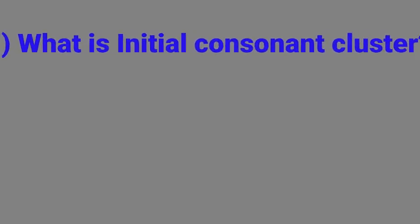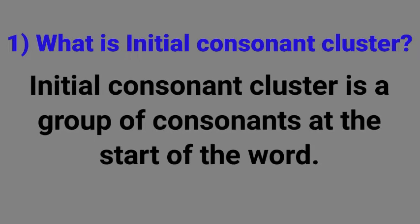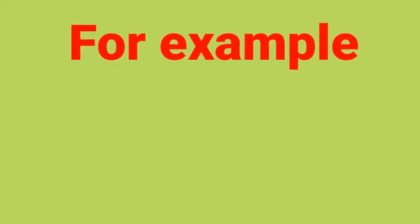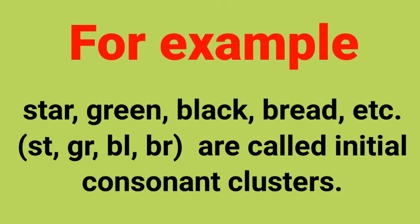پہلے ہم initial consonant cluster کو بیان کریں گے۔ What is initial consonant cluster? Initial consonant cluster is a group of consonants at the start of the word — یہ ایک لفظ کے شروعات میں استعمال ہوتے ہیں۔ For example: star, green, black, bread. Star میں 'st'، green میں 'gr'، black میں 'bl' اور bread میں 'br' initial consonant cluster کو ظاہر کرتے ہیں۔